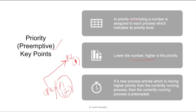In the earlier non-preemptive priority algorithm, once a CPU is assigned to P1, until and unless it completed execution it would not release the CPU. But in the case of preemptive, while executing a process, if a new process comes and arrives with a higher priority than the current process, then the currently running process will be preempted — that is, forcibly stopped and added to the ready queue.